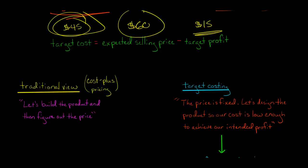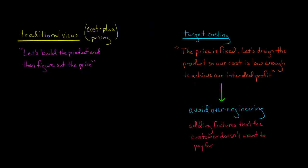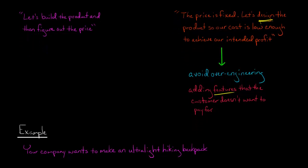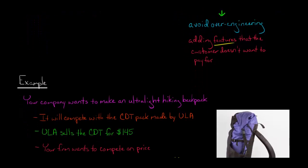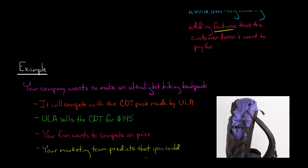So you know right up front what the price is going to be, and you're trying to meet this target cost. When you're designing the product, you are trying to avoid overengineering, and that means building in features that the customer isn't necessarily going to value and want to pay extra for. Target costing is very different than cost-plus pricing. You're trying to make sure that no matter what happens, you come in below that maximum allowable cost.